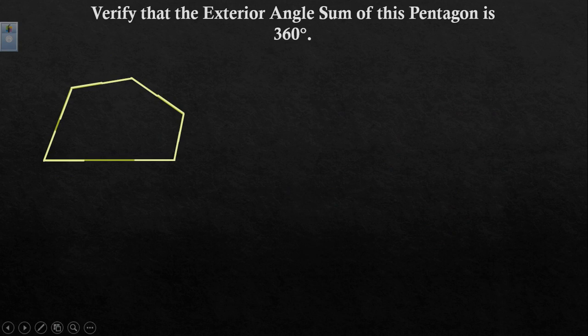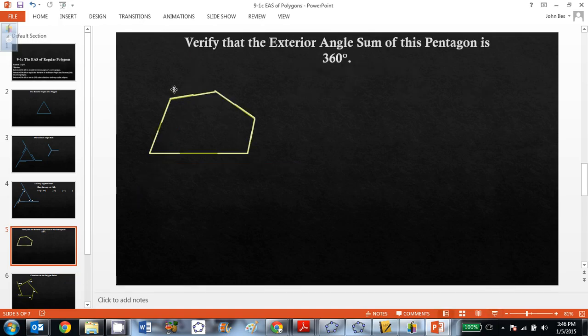All right. So let's verify that the exterior angle sum of this pentagon is 360 degrees. Well, check this out. This one's a little more complex. I didn't have it prepped ahead of time.